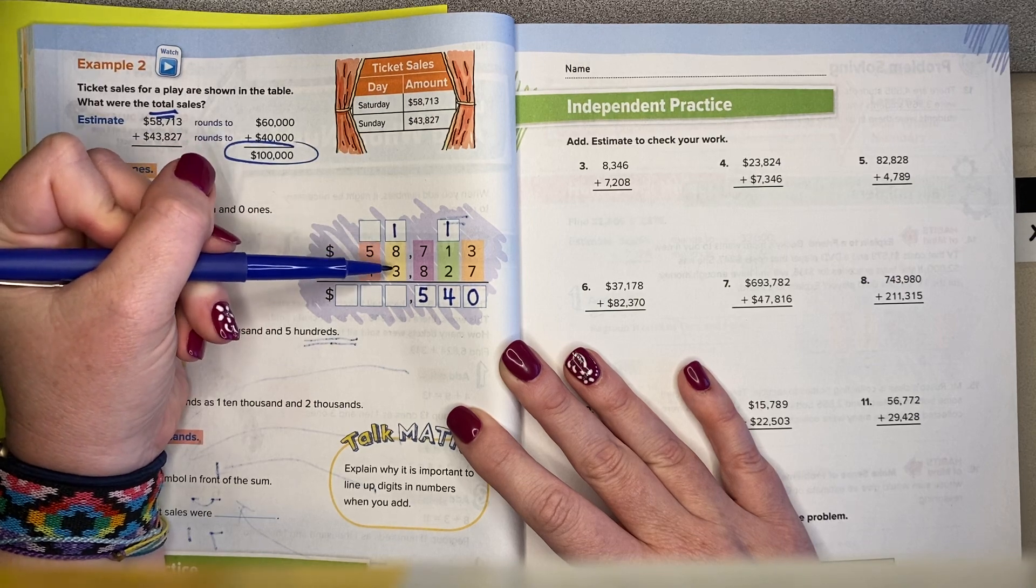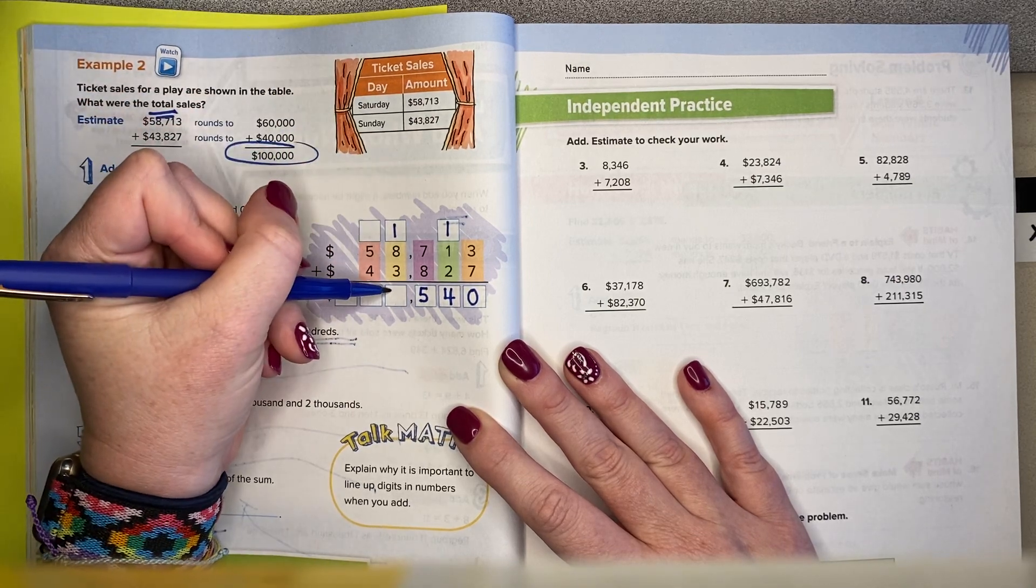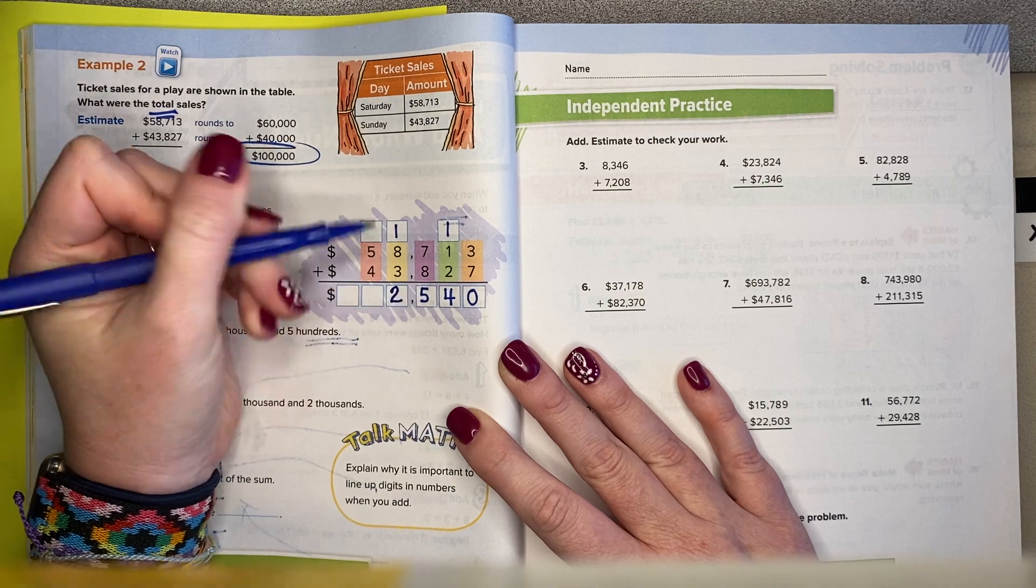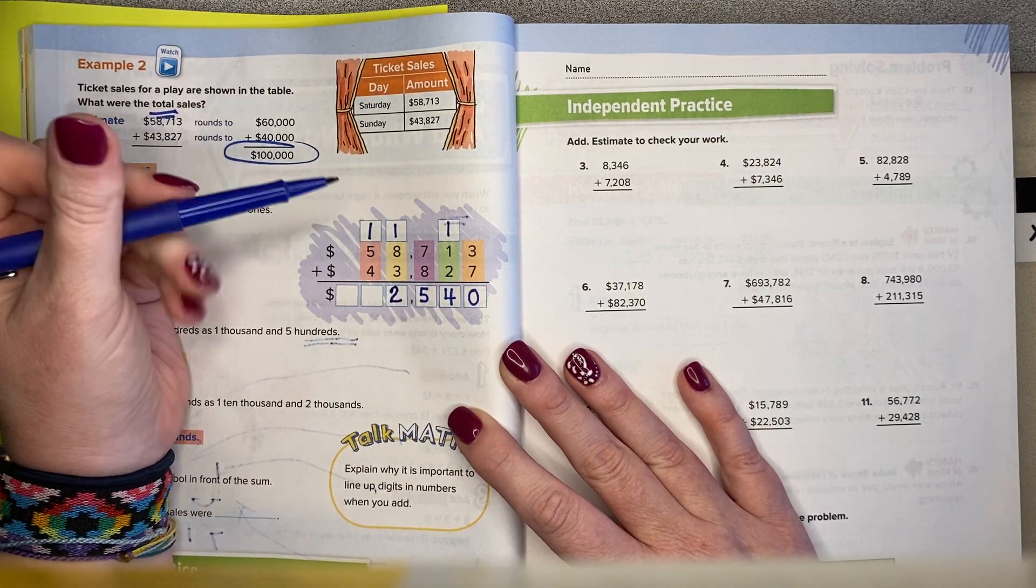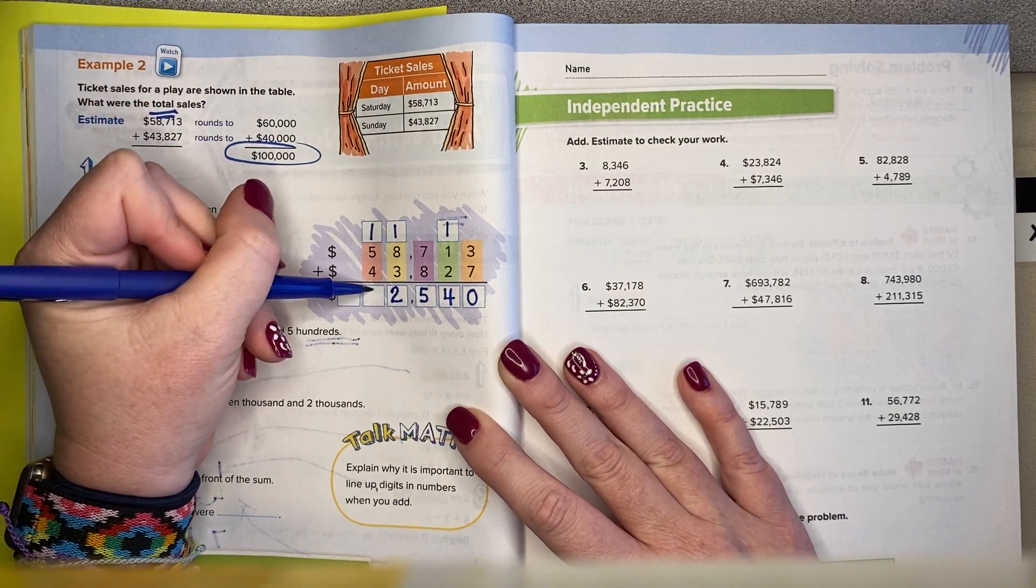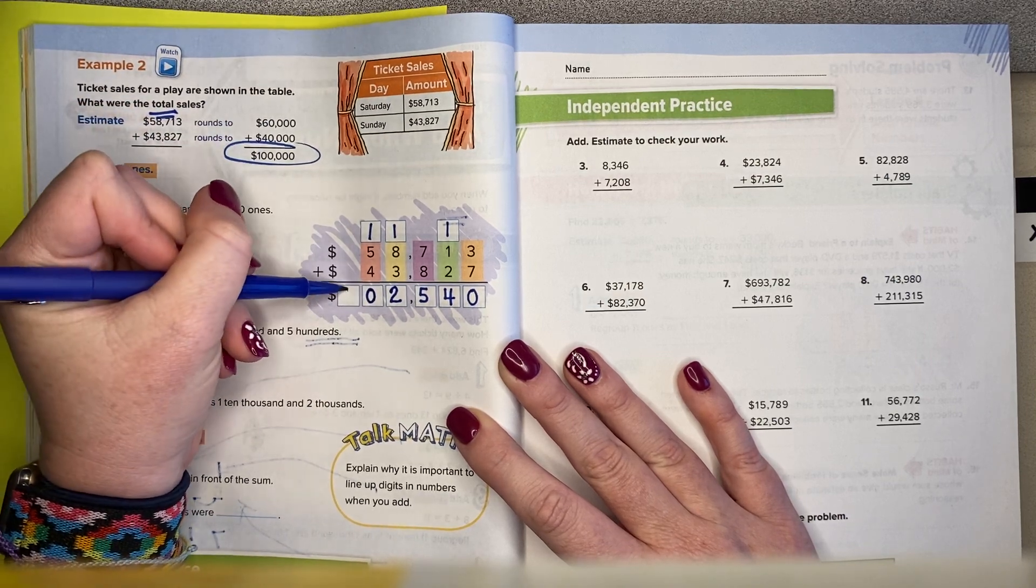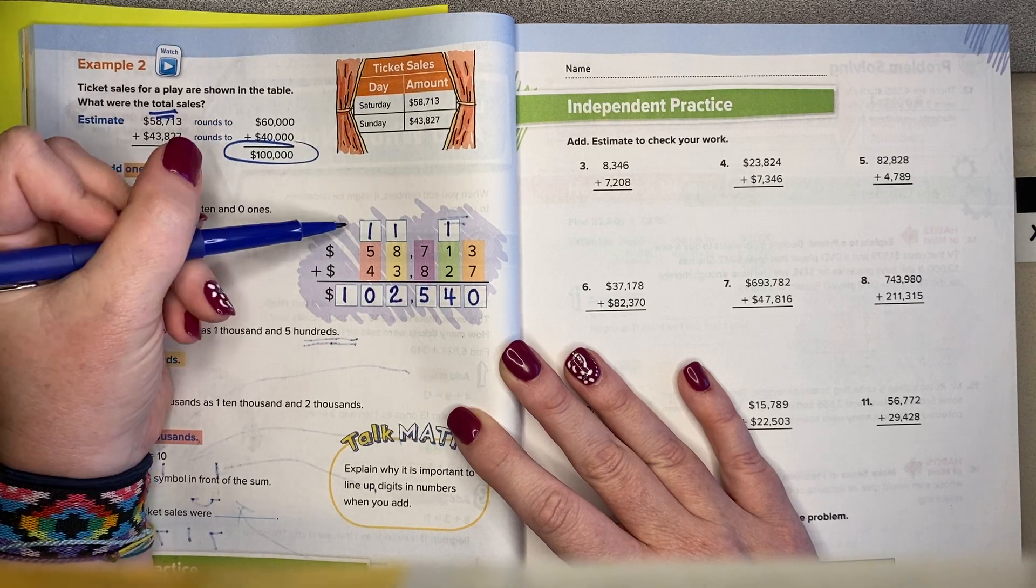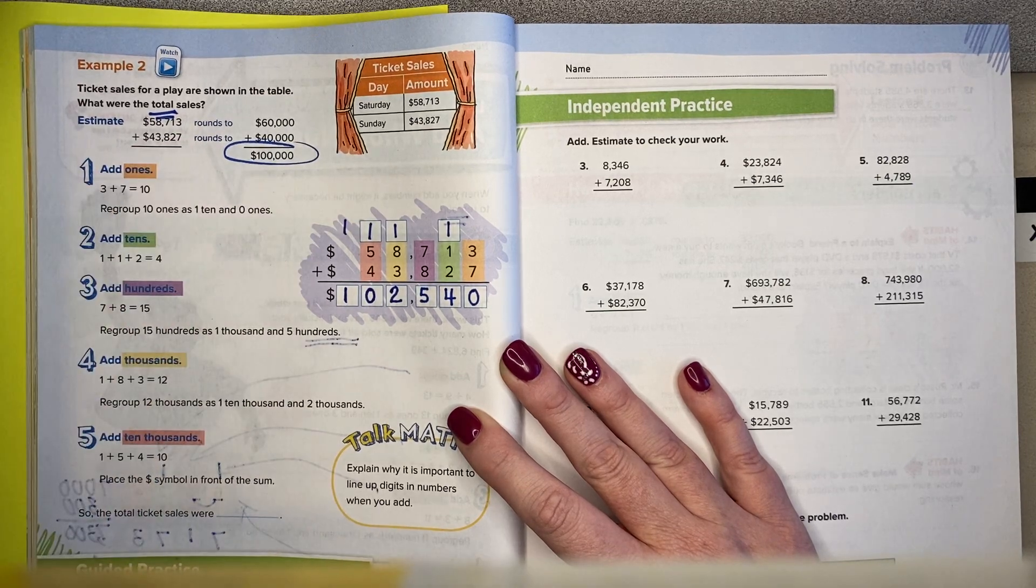1 plus 8 plus 3 is 12. I put the number in the ones place in the answer, and I regroup the number in the tens place. 1 plus 5 plus 4 is 10. So I can just write it like that, or I could have brought it up here and then brought it down. Either way works.